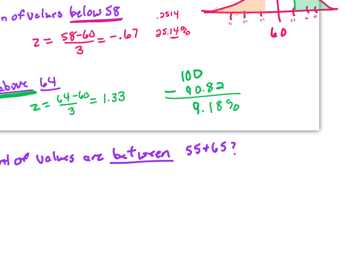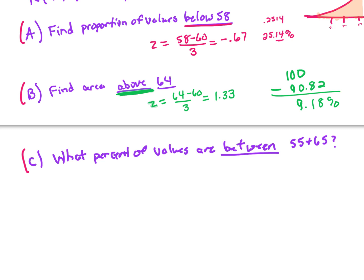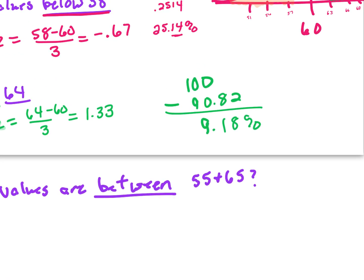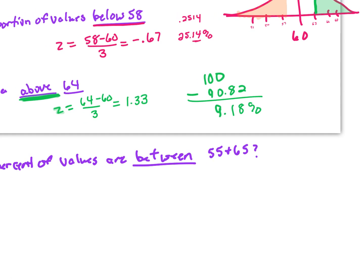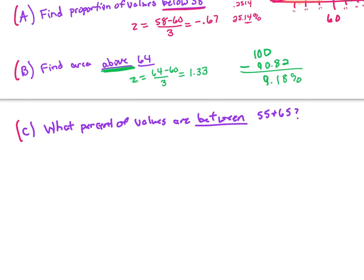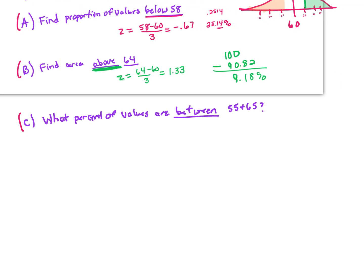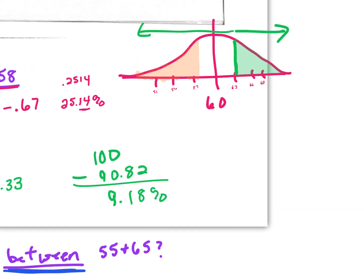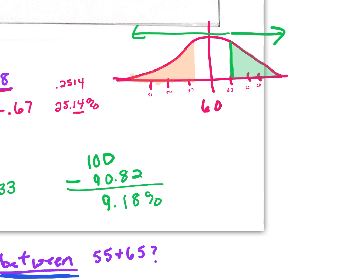That gives us 9.18%. Keep in mind: whenever the question uses words like above, longer than, larger than, or greater than — implying we're going from a particular location and higher — we have to subtract from 1 or 100, depending on whether we write it as a decimal or a percent. For the last example, we're looking between two values: what percent of values are between 55 and 65?